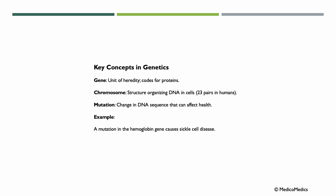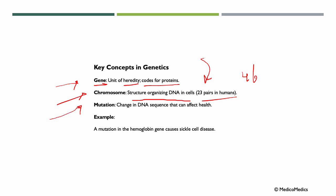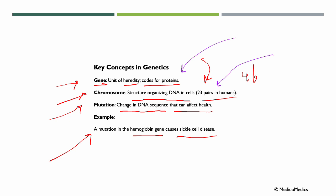Some key concepts in genetics include: the gene, which is the unit of heredity and codes for proteins; chromosomes, which organize DNA in cells — we have 23 pairs in humans, 46 total; and mutations, which are changes in DNA sequence that can affect health. An example is a mutation in the hemoglobin gene leading to sickle cell disease. Genes are like instructions, and chromosomes are the books that hold these instructions.